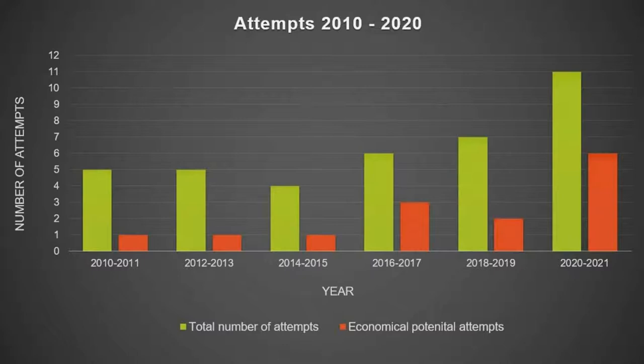This chart states an increasing number of studies investigated the rooftop photovoltaic potential to generate energy in cities during the years 2010 to 2020. This increment is mainly due to the technological developments and the need for precise knowledge of solar energy resources and electricity production.